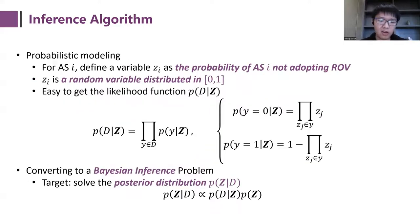For each AS i, we define a variable z_i to represent the probability of AS i adopting ROV. Then z_i is a random variable distributed in the interval between 0 and 1. Then it's easy to get the likelihood function for the observed data D. Under these settings, if we want to know the ROV deployment of AS i, we need to solve the marginal distribution of z_i in its posterior distribution. So if we can solve the posterior distribution of the big Z, we know the deployment of ROV of all these ASes. In this way, the problem is converted to a Bayesian inference problem.